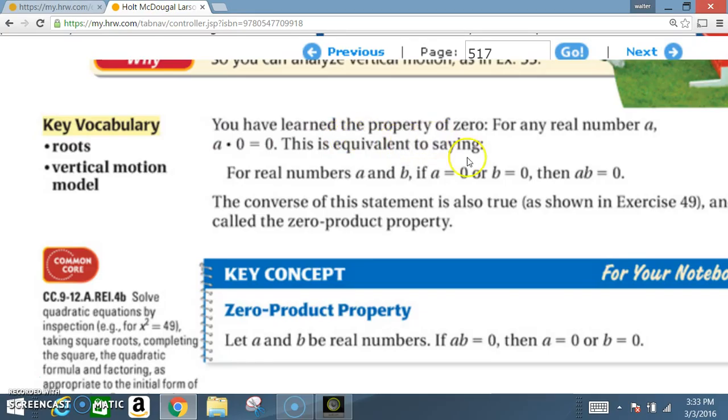You have learned the property of zero. For any real number a, a times 0 equals 0. This is equivalent to saying for real numbers a and b, if a is 0 or if b is 0, then a times b is 0.